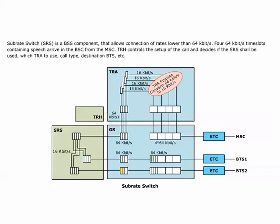After this, the GS can set up connections towards BTS-1 and BTS-2, which will contain the correct sub-rate channels. SRS is always used when TRA in-pool is used. It is also needed when we utilize LAPD multiplexing, which is when the speech and signaling towards the RBS is multiplexed onto the same 64 kilobits per second channel.